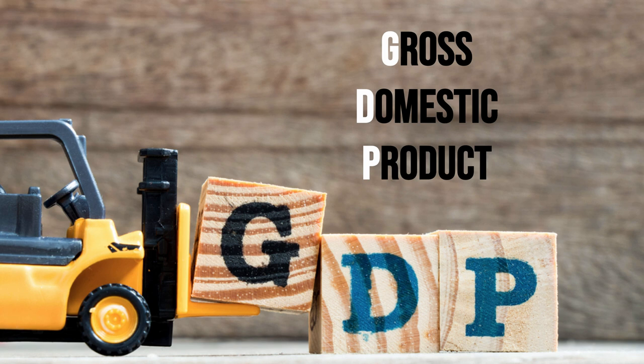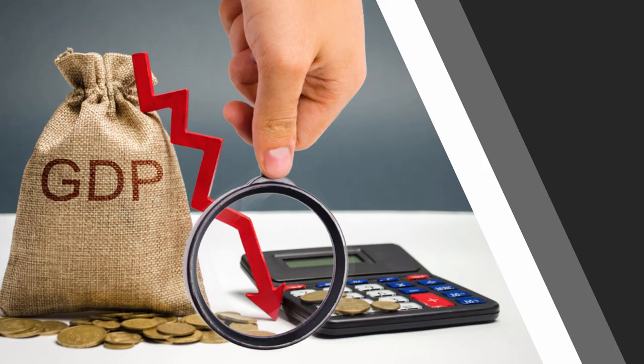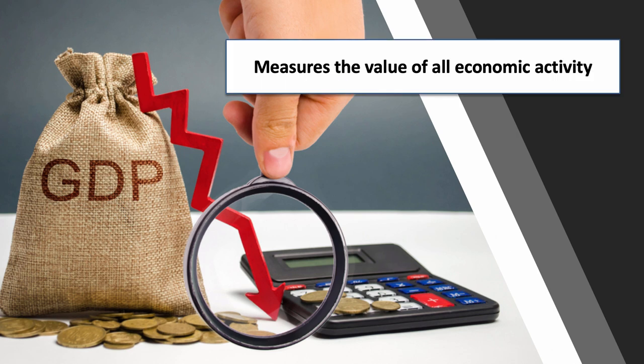GDP is short for gross domestic product. So what on earth is that? Well, GDP is a measure — an official statistic — of the value of all the economic activity that takes place in an economy over a particular period of time. For example, a month, a quarter, or a year — 12 months.